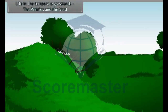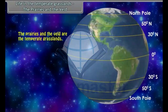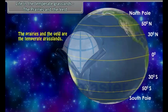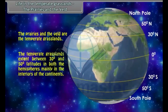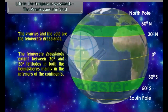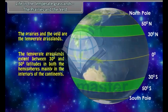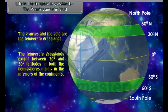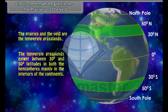Life in the Temperate Grasslands: The Prairies and the Veld. The Prairies and the Veld are the Temperate Grasslands. The Temperate Grasslands extend between 30 degrees and 50 degree latitudes in both the hemispheres, mainly in the interiors of the continents.